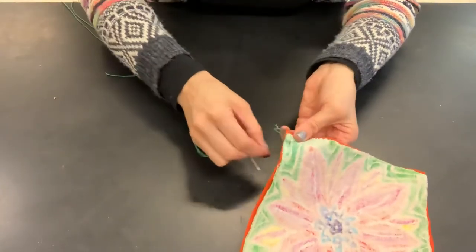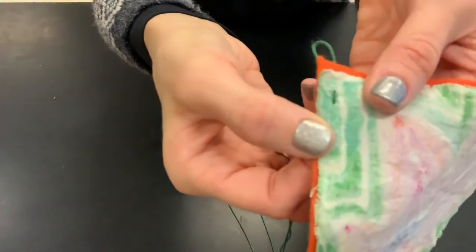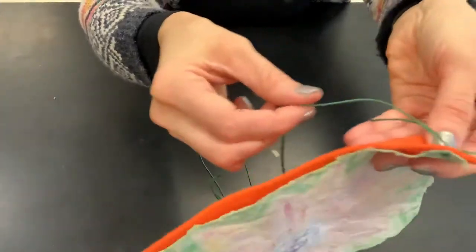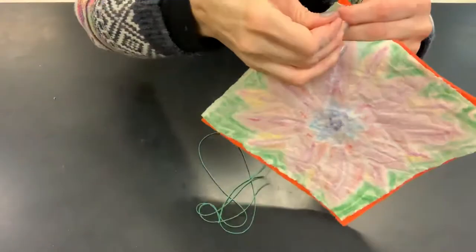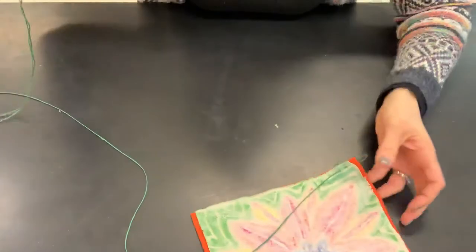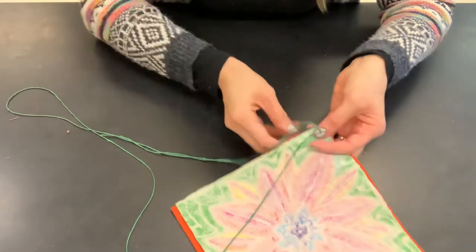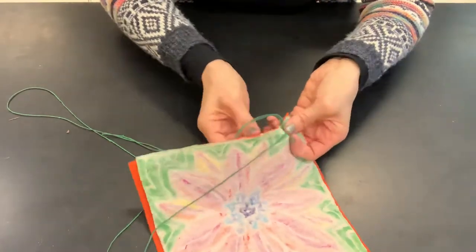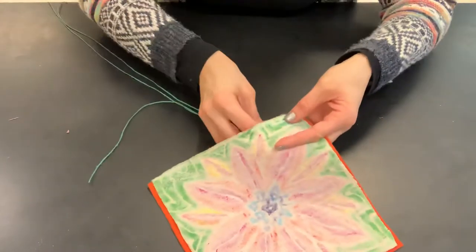Okay, make sure that the string goes the whole way through. Okay, so here's one stitch. Now my string is on the orange side. Okay, so now I'm gonna go up. I'm gonna leave a little space and I'm gonna go up through the fabric. And I'm gonna continue that.